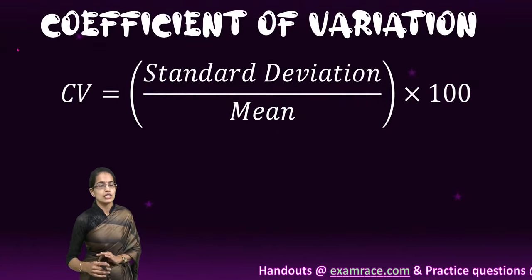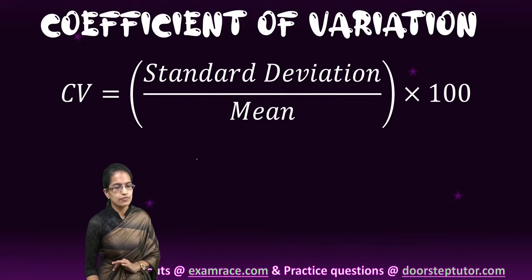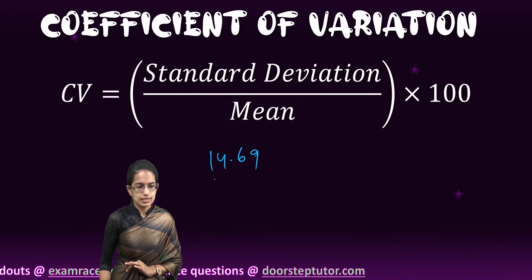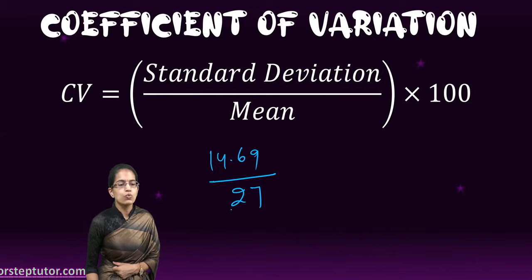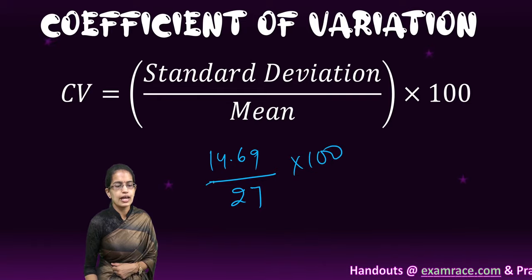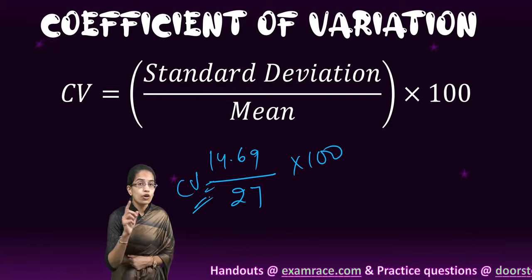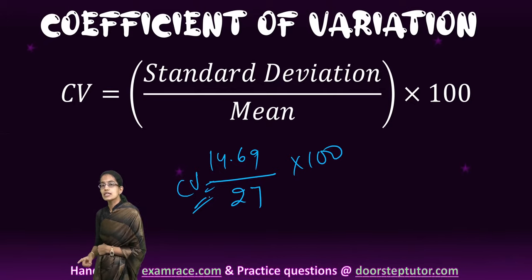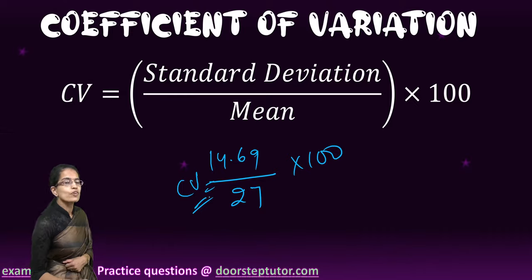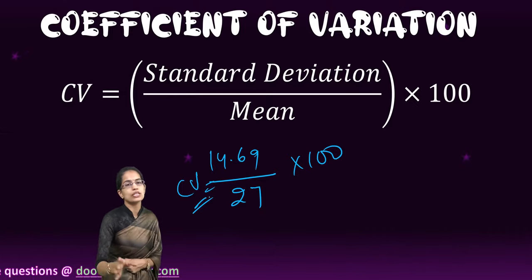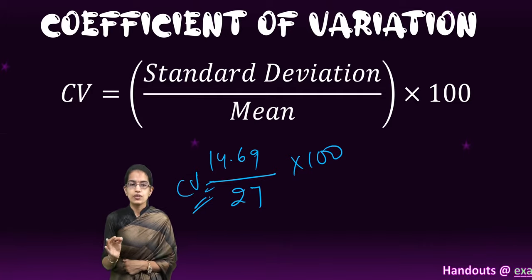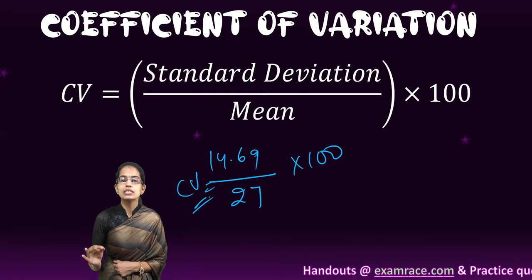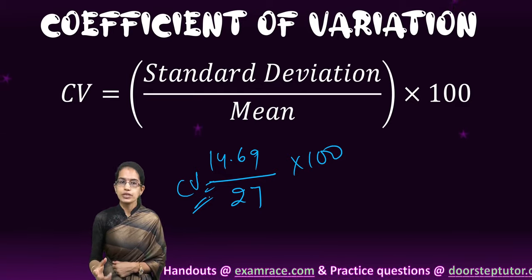Since we have calculated standard deviation as 14.69 and mean as 27, the coefficient of variation = (14.69 ÷ 27) × 100. CV is a relative measure of dispersion, while standard deviation is an absolute measure — this is the main difference. Since CV is a relative measure, it can be used across any two measurements for comparison.